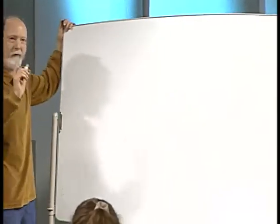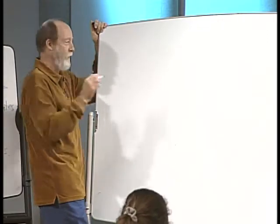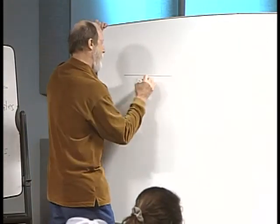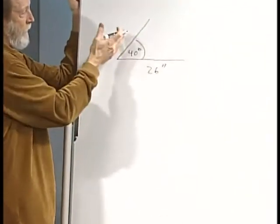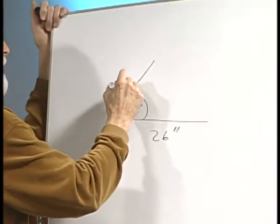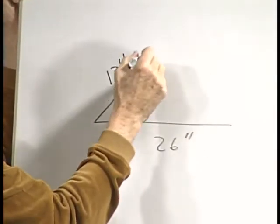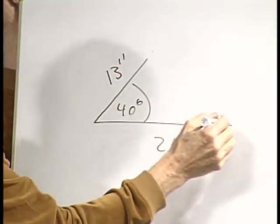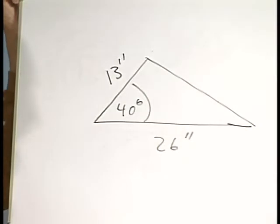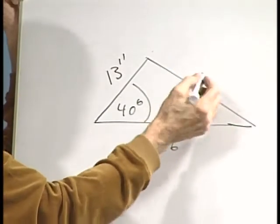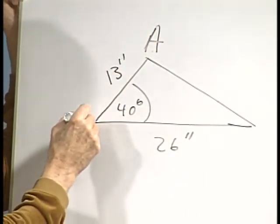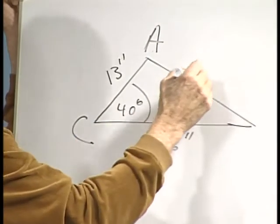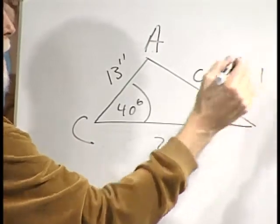Let's take the triangle we had so much fun with using the law of sines and cosines. We had a length of 26 inches, a length of 40 inches, an angle of 40 degrees, and on the other side of that angle a 13-inch leg. The final drawing looks something like that, and we labeled this angle A at the top, angle C, and found side C was approximately 18.1 inches.